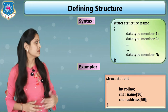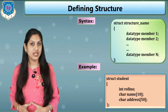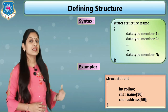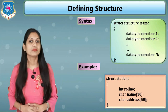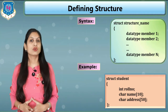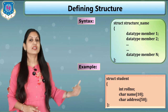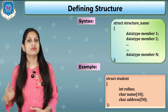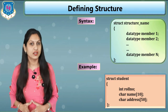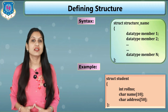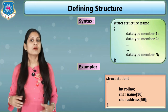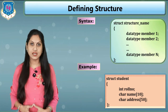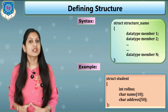Here is a simple example. The struct keyword is used with the structure name 'student', and inside curly brackets we write the data type and member. The first member is role number, which is always in integer form, so the data type is int. The second is name — for name we use a character array of size 10, indicating a maximum of 10 characters. The third is character address with size 50. After the closing bracket we must put a semicolon.